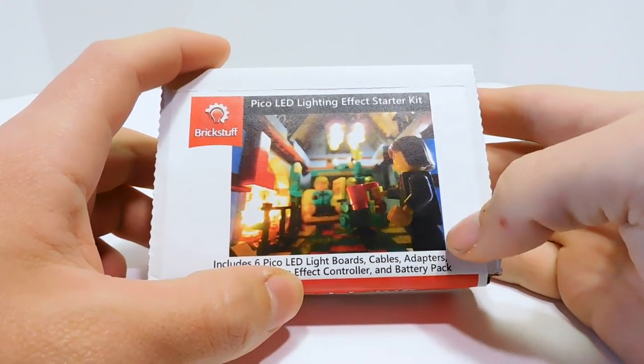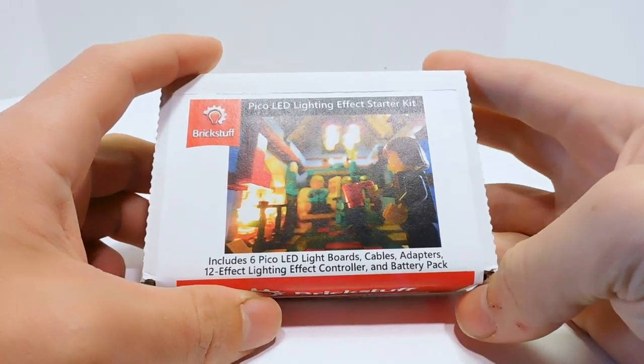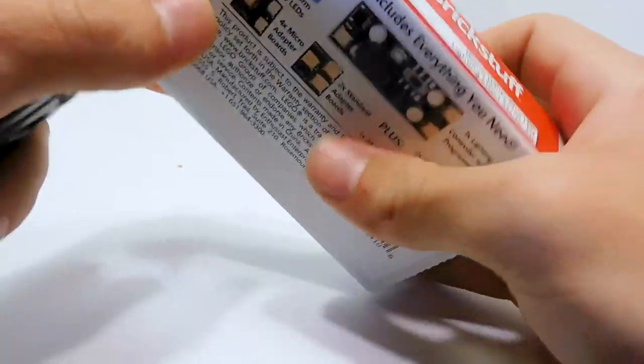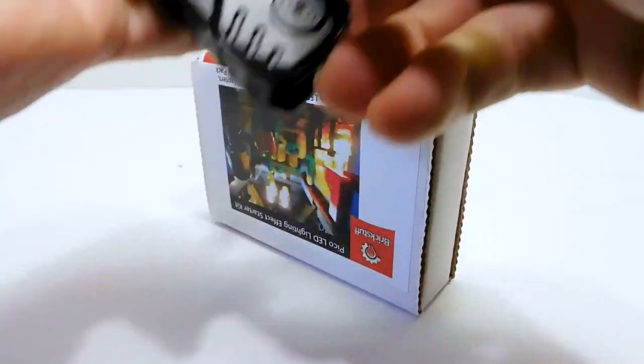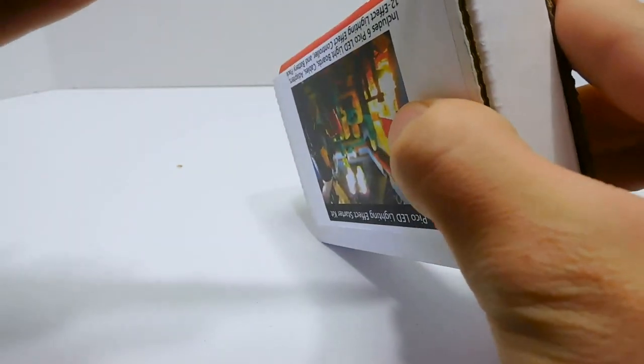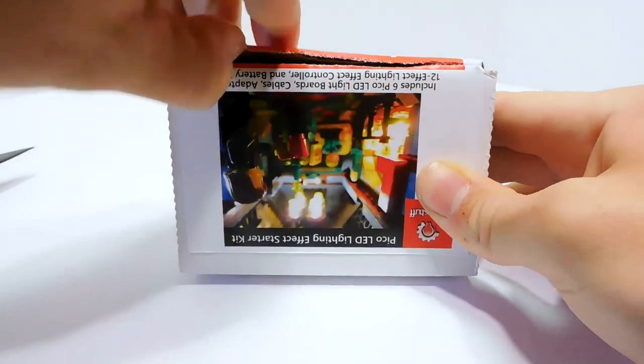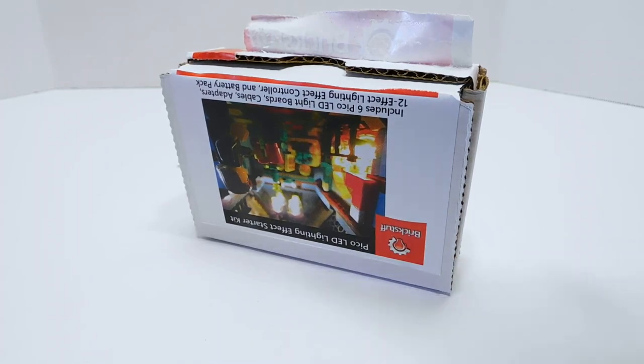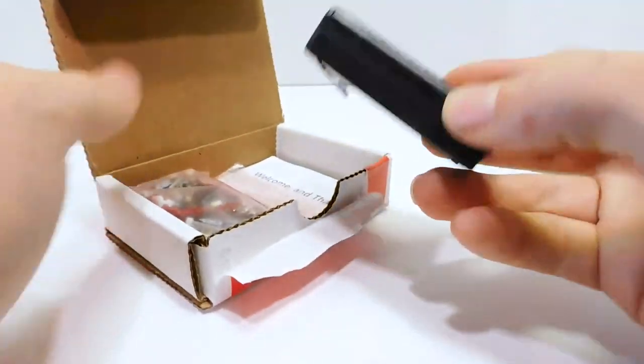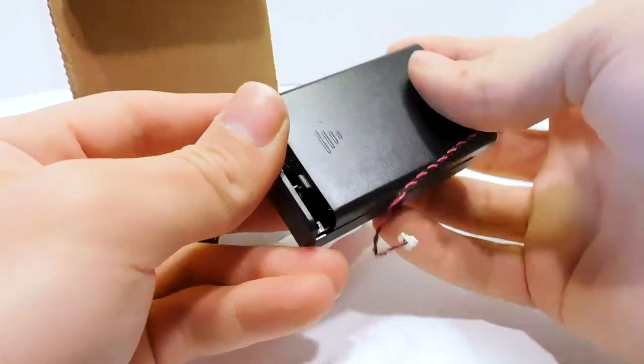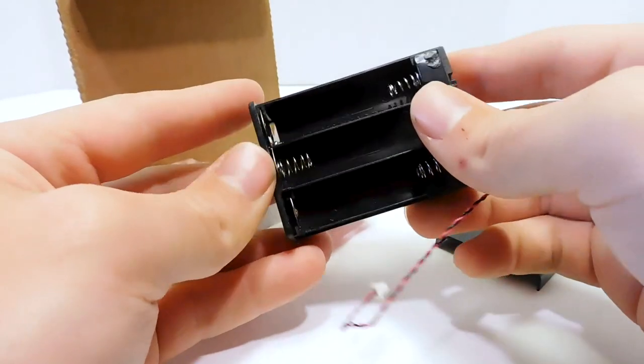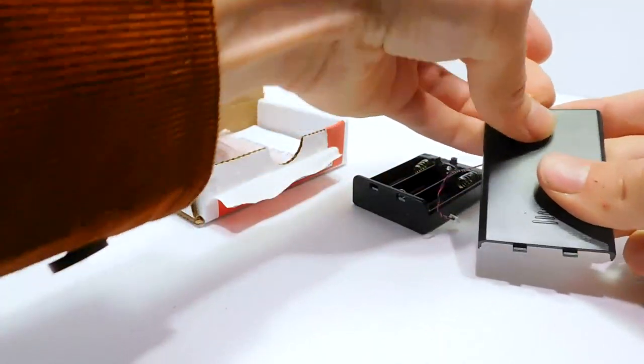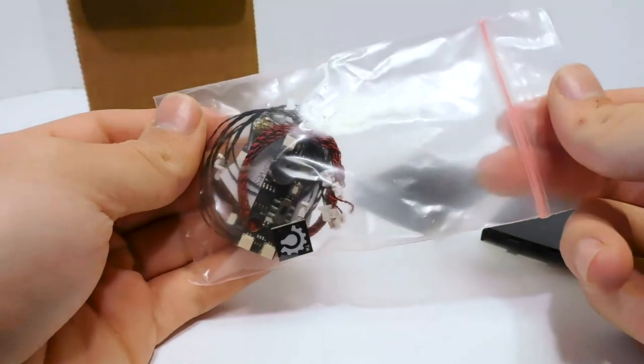Look at that - candy comes in the Brickstuff thing with their own branding. That's really cool. In here is the lighting effect starter kit. You can see a general idea of what you can do - lights on the ceiling, fireplace lit up, which is exactly what I'm looking for. This comes with six LED light boards, cables, adapters, 12 effect lighting controller, and a battery pack.